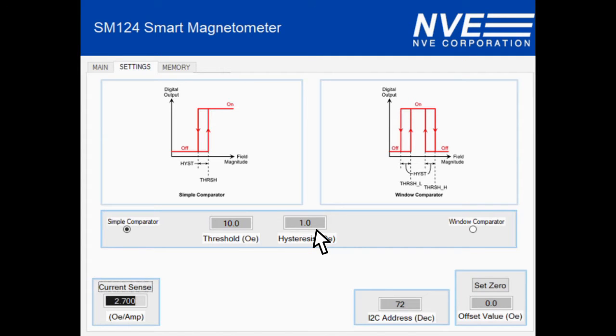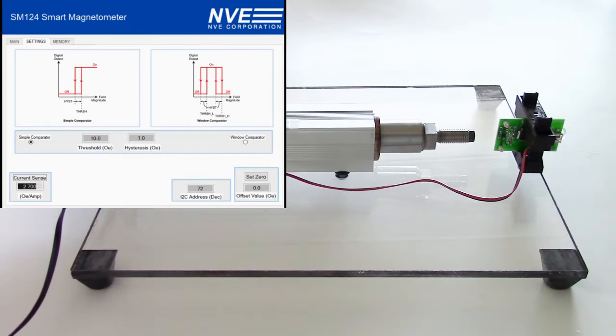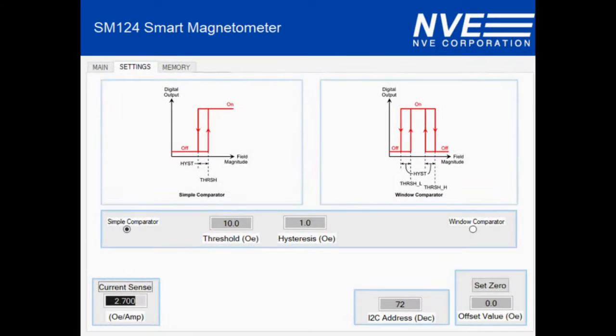The default turn-on, turn-off differential is small, but for this application, we set the threshold for 10 ersteds and the hysteresis for nine for a one ersted turn-off threshold.